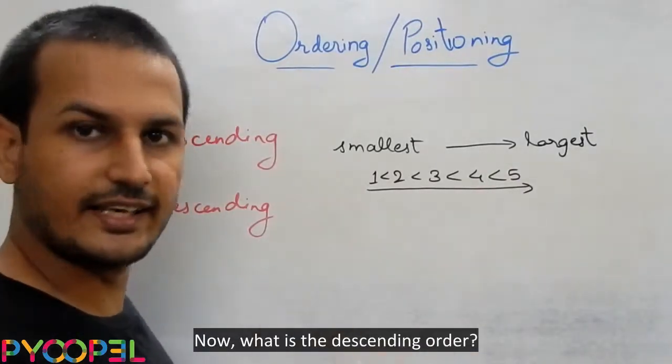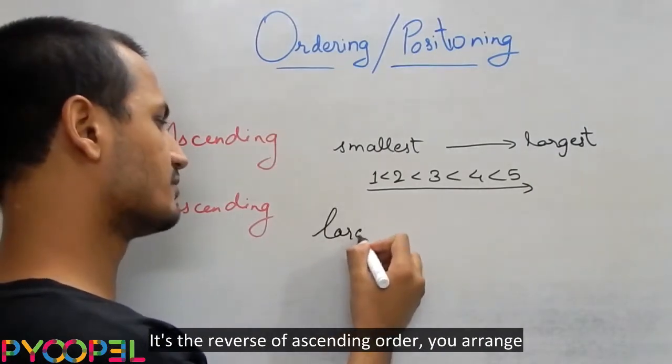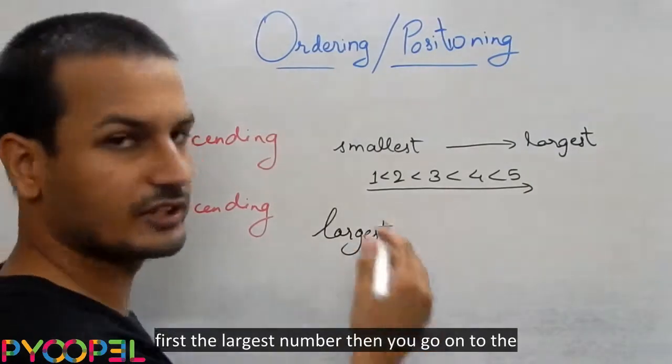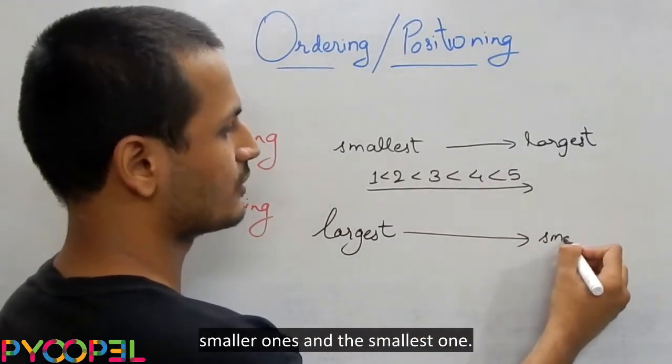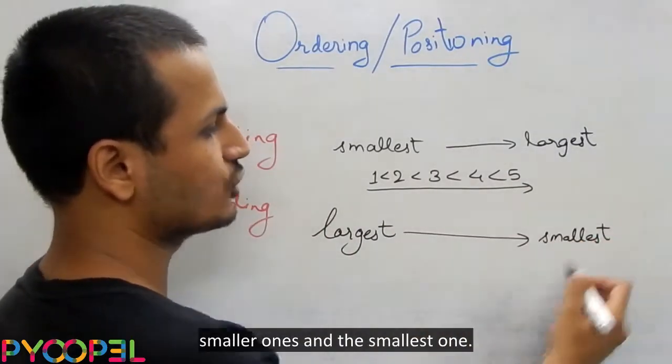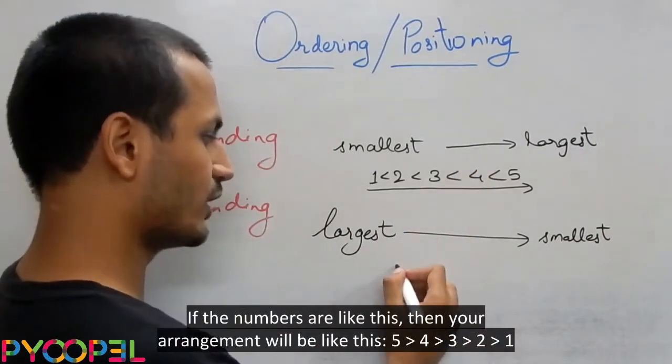Now what is the descending order? It's a reverse of ascending order. You arrange first the largest number, then you go on to the smaller ones and then the smallest one. So if the numbers are like this, then your arrangement will be...